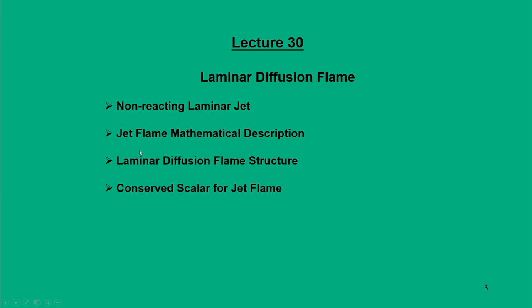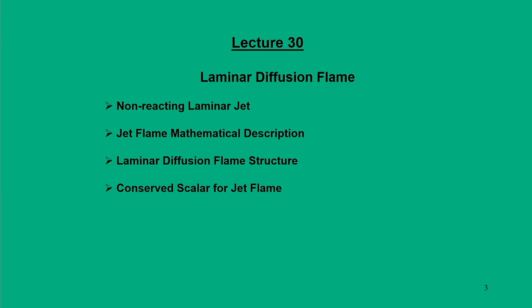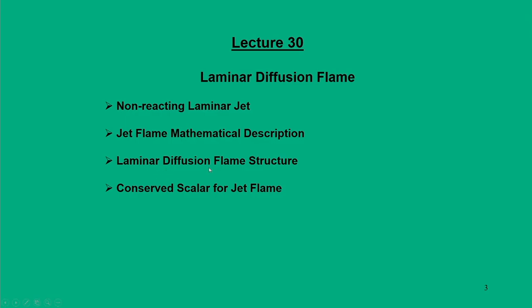In this laminar diffusion flame, we will touch upon the following topics. First is the non-reacting laminar jet, then jet flame mathematical descriptions. We will not go deep into the governing equations and solutions; rather, we will focus on the end results and physical aspects. Next, we discuss laminar diffusion flame structure and the conserved scalar introduced in earlier lectures — its significance with respect to jet flame.